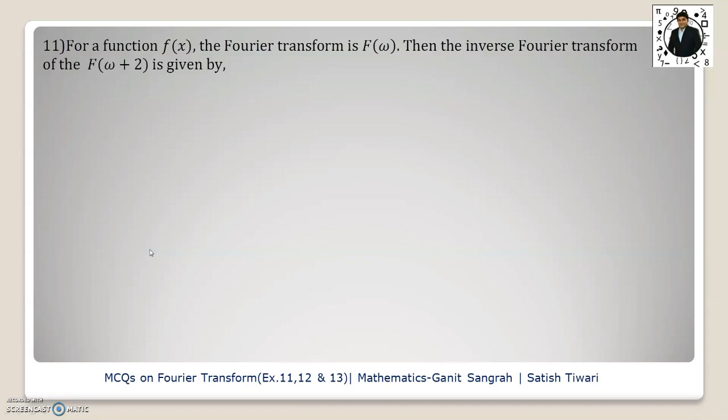Example number 11: For a function f of x, the Fourier transform is f of omega, then the inverse Fourier transform of f of omega plus 2 is given by. The 4 options are here and the option c is correct option.